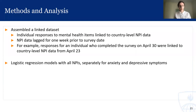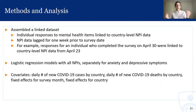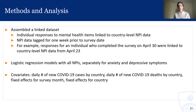For the more statistically minded folks in the audience: we used logistic regression models for all the non-pharmaceutical interventions and fit them separately for anxiety and depressive symptoms. We also included a number of different covariates — as you can imagine, mental health is affected by all the different things occurring in the social and environmental world around us. We included other covariates that could presumably have affected both mental health and the types of interventions that a country is implementing: COVID-19 cases, COVID-19 deaths, and we also included the survey month and the country to adjust for time-fixed differences between countries.